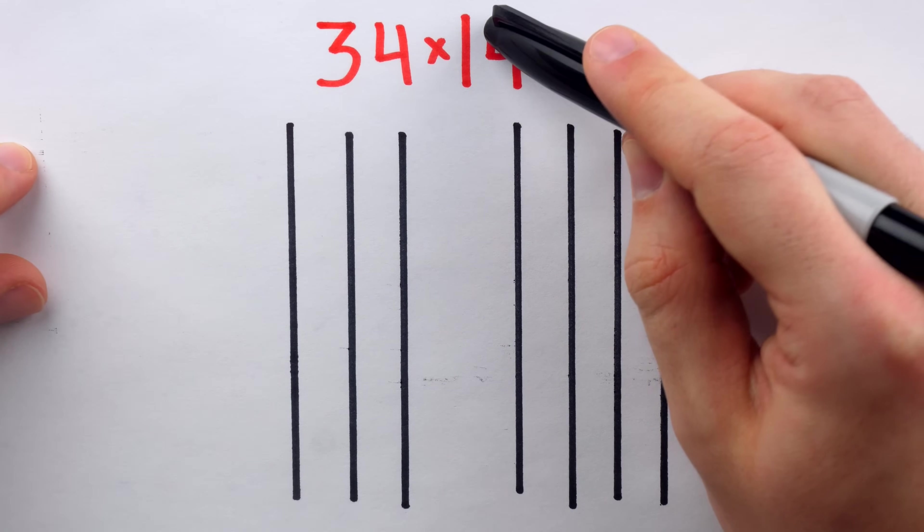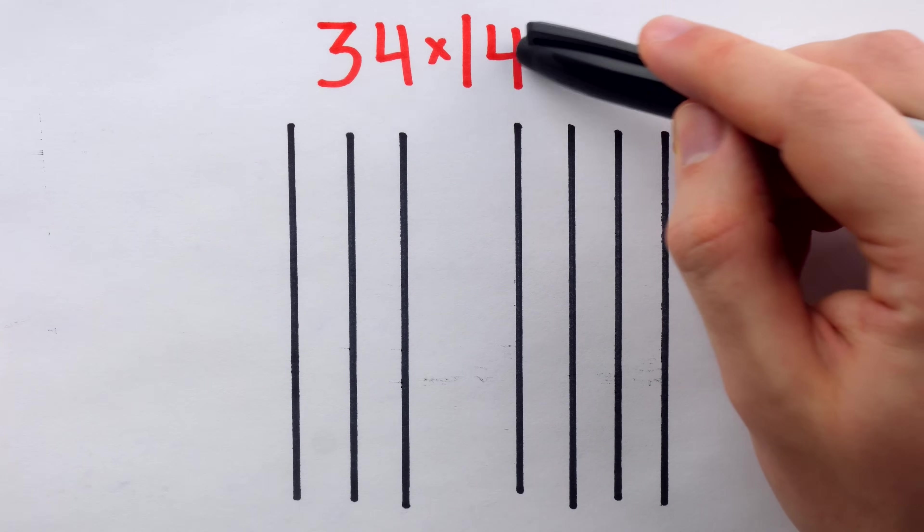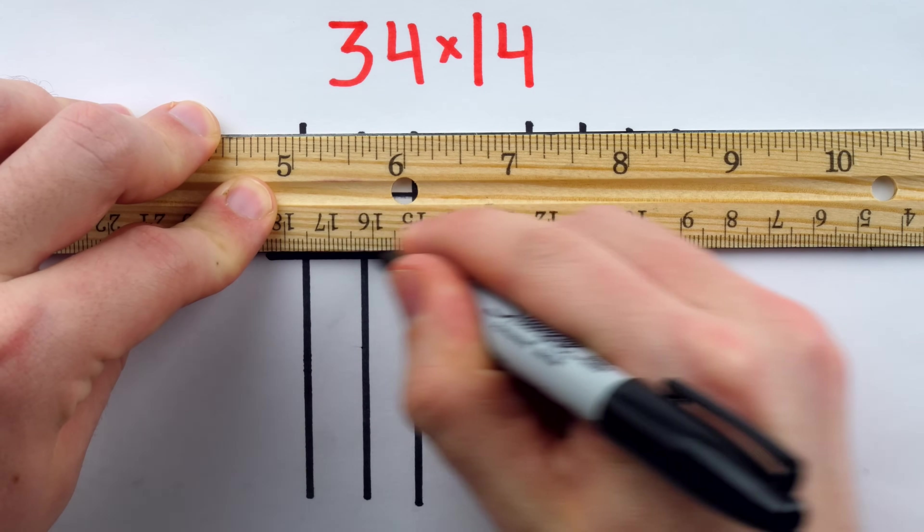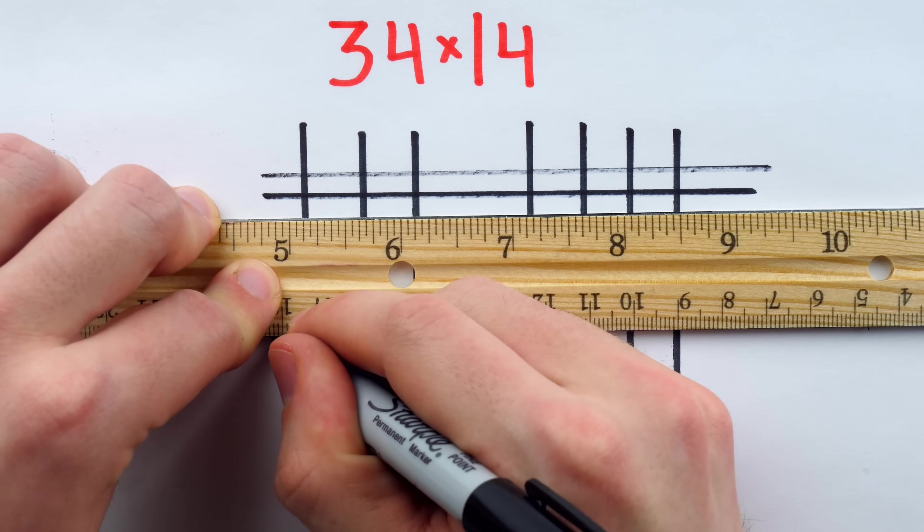And then for the 14 we'll do a similar thing but the lines are horizontal, and you want to make sure you begin with the ones place, so we begin with four horizontal lines. And then we give some space and draw one more horizontal line for the 10.